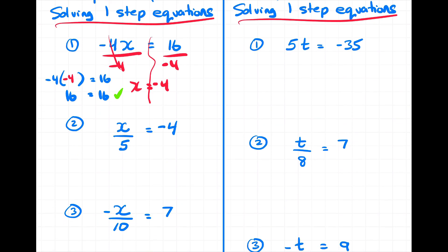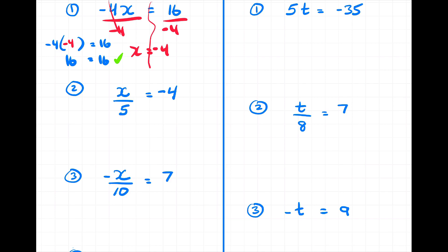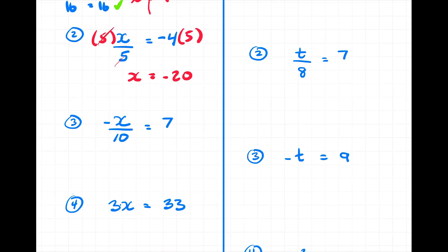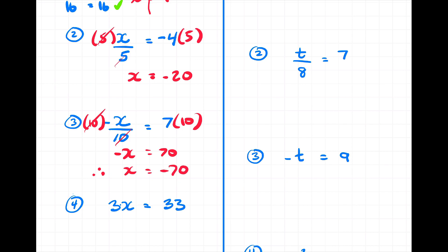Example number two: x divided by five equals negative four. The opposite operation is to multiply by five. Whatever I do to the left, I need to do to the right — those fives cancel, leaving x equals negative four times five, which is negative 20. Example number three: I've got negative x divided by 10. I multiply both sides by 10, eliminating the tens, giving negative x equals 70. If I see negative x equals 70, I can assume therefore that x equals negative 70.